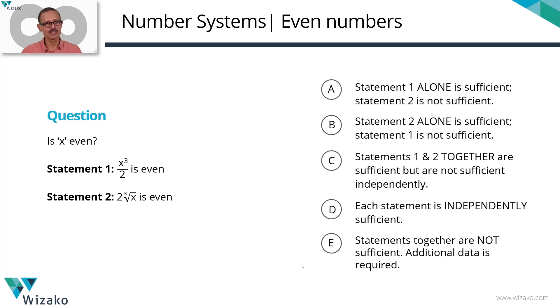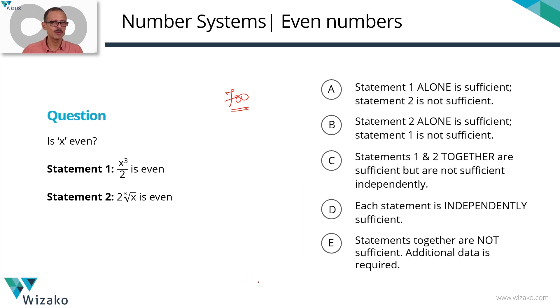This GMAT data sufficiency sample question is a medium to hard question — I'll classify it as a 700-level question. It comes from the topic of number properties and focuses on the concepts of integers, classifications of numbers, and even numbers.